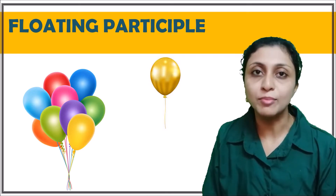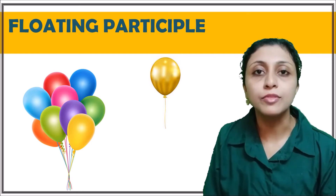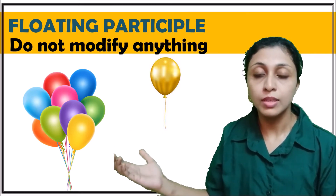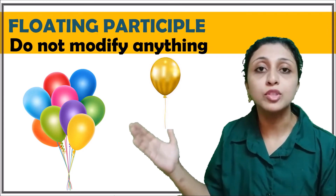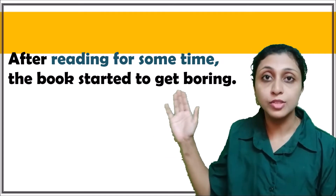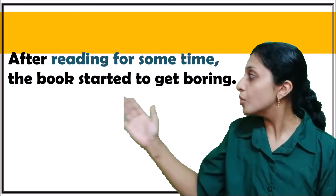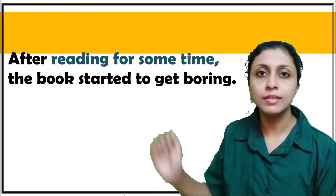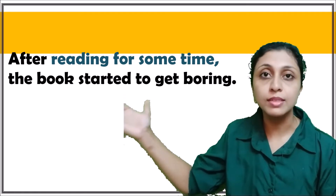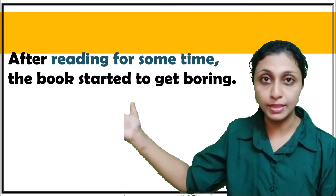Similarly, in the case of the floating or dangling participle, there is a phrase in a sentence that does not modify anything. When it does not modify a noun, that phrase is called a floating participle. For example: 'After reading for some time, the book started to get boring.' You can ask: who was reading? Was the book reading? The phrase 'after reading' is floating — it is not modified by any noun and stands independently without making sense.